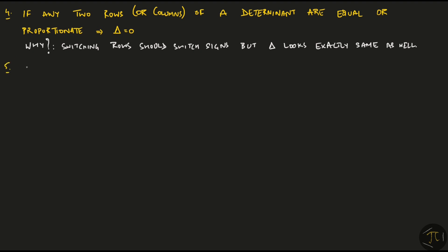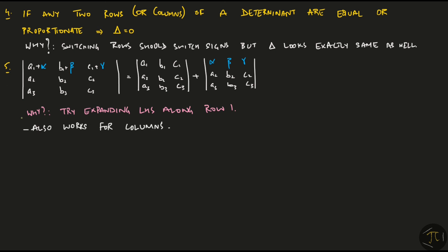The next property is regarding splitting the determinant. Here, every element in the first row is the sum of two numbers. So we get the first determinant with one set of numbers and the next one with the other set of numbers. Notice that this splitting happens only across one row and the remaining rows stay the same in both the determinants. So if you want to know why this works, try expanding the left hand side along row 1. Also, this process works for columns as well.